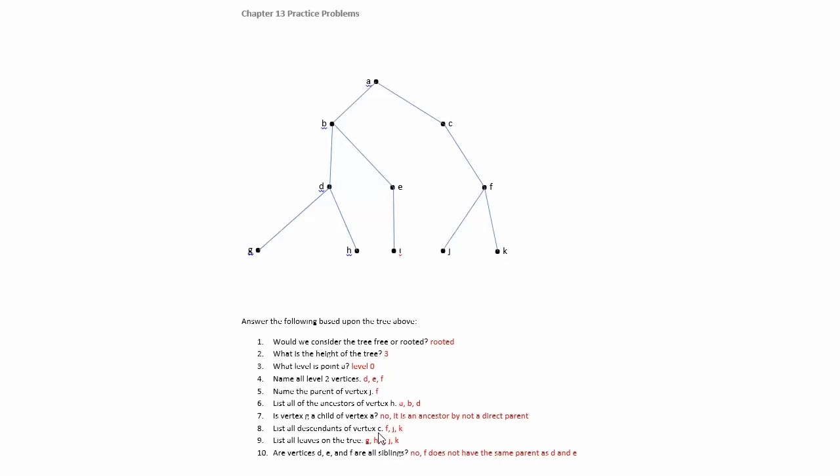List all descendants of vertex C. So here's C, and then if you go all the way to the bottom, you'll see that F, J, and K are going to be descendants.